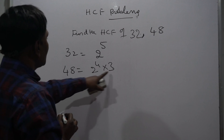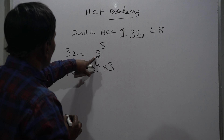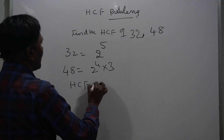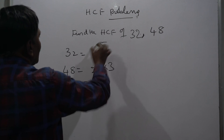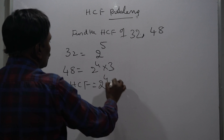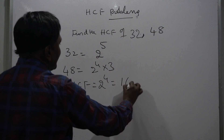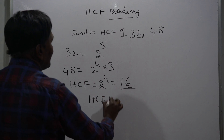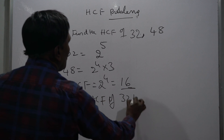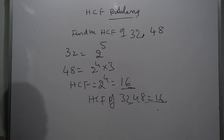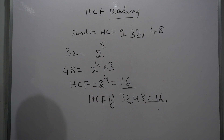2 to the power 4 is 16, and 16 into 3 is 48. 2 is a prime number. The common factor is 2 to the power 4, which is 16. So the HCF of 32 and 48 is 16. I hope you understood well. If you like this video, share it and subscribe. Thank you very much.